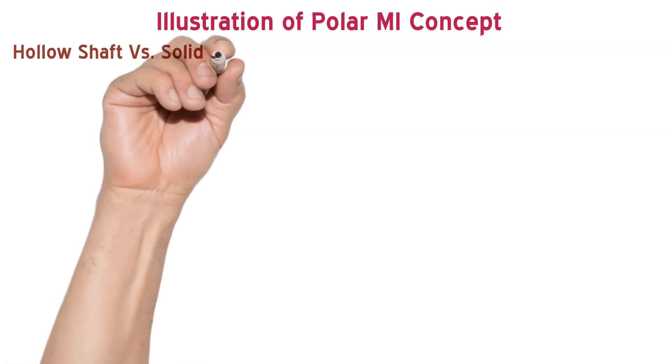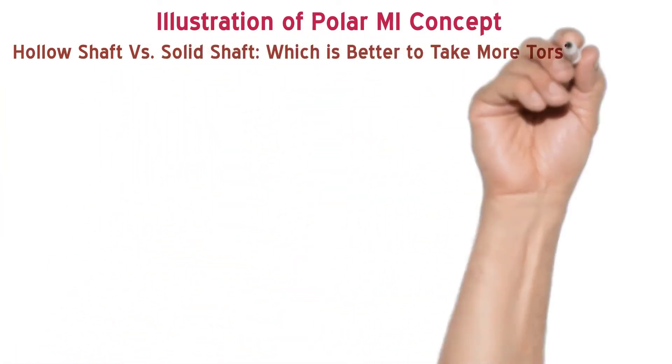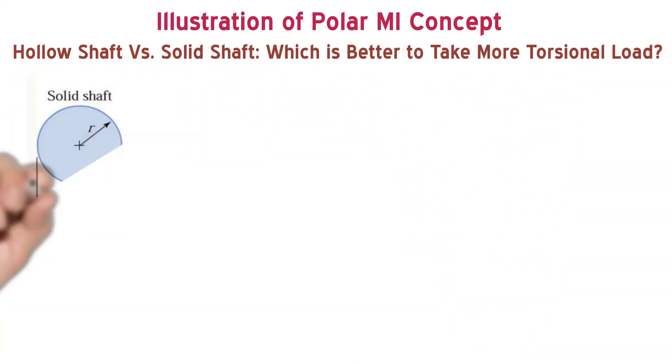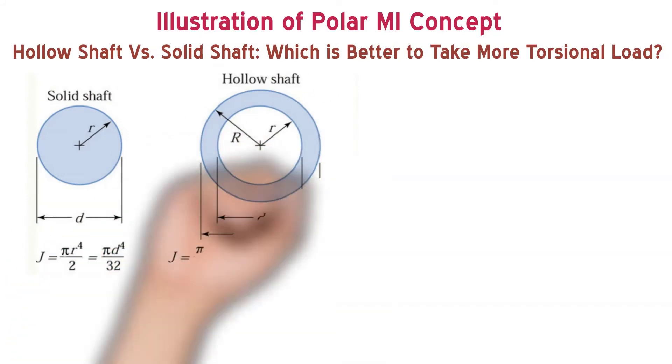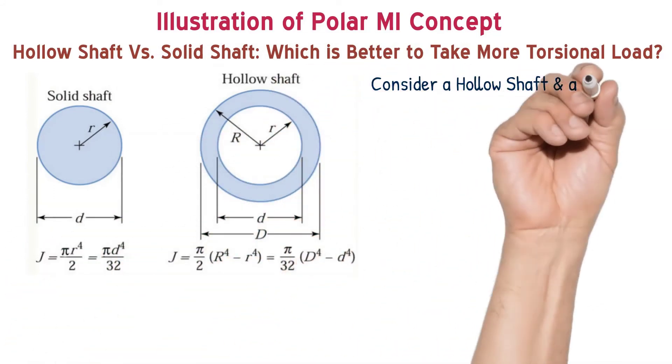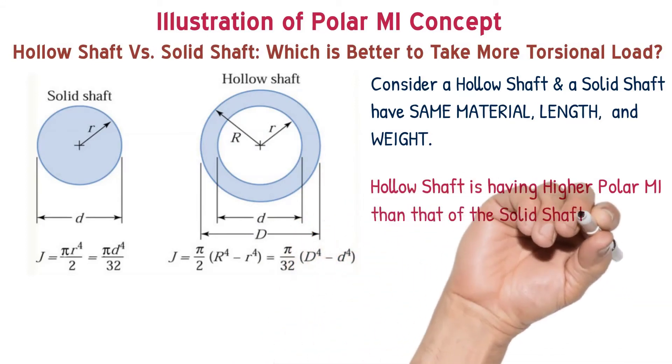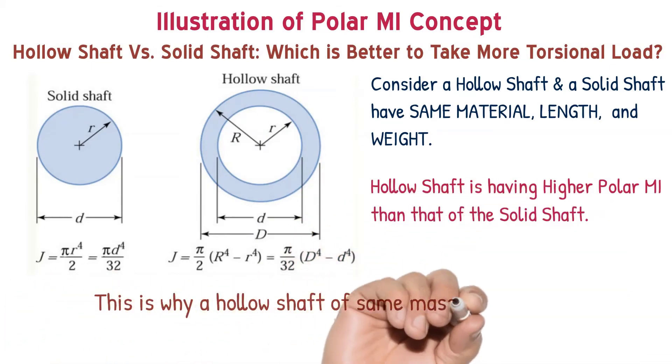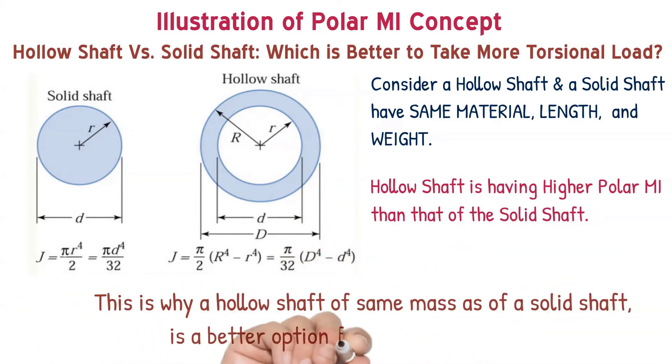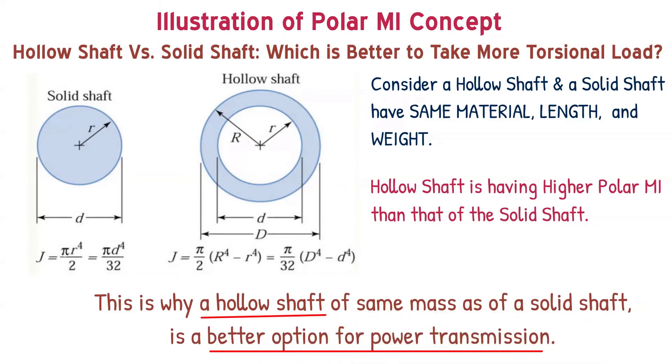Let us compare hollow shaft with solid shaft to find which is better to take more torsional load. Both the shafts are made up of same material having same length and weight. It is proved that hollow shaft is having higher polar moment of inertia than that of the solid shaft. That is the reason why hollow shaft is a better option for power transmission than solid shaft.